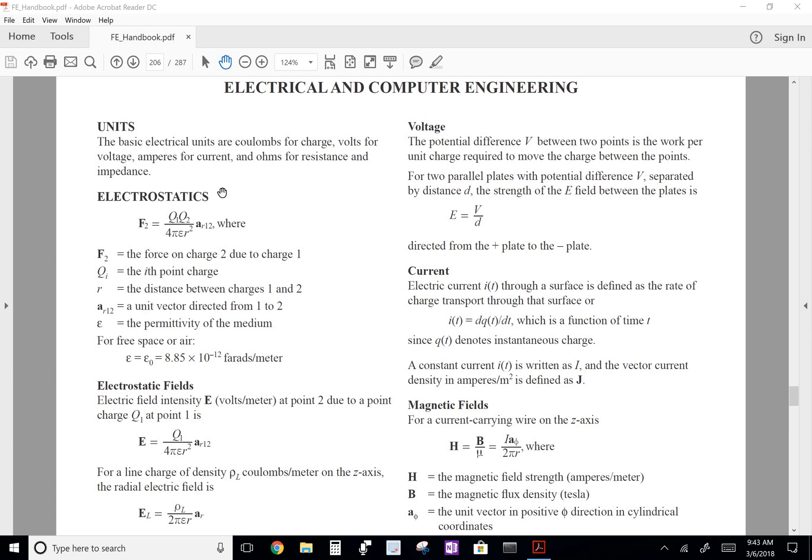And we have here, just underneath, we have an electric fields section, where it says that the electric field intensity E in volts per meter at point 2 due to a point charge Q1 at point 1 is given by this equation here, where epsilon 0 is a constant, it's the permittivity of free space.